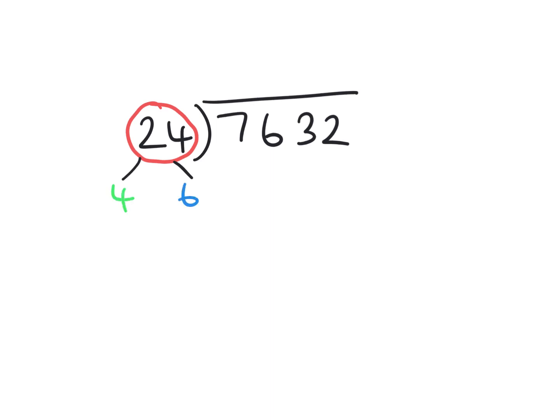You could also use 3 and 8, but what we're looking for are two single-digit factors. The reason why it's a two-step is because there's two parts to it. The first part is we're going to divide the number by 4, the first factor. So that's 7632 divided by 4.